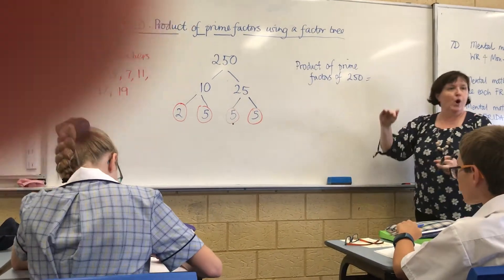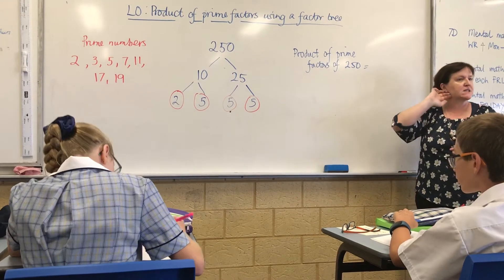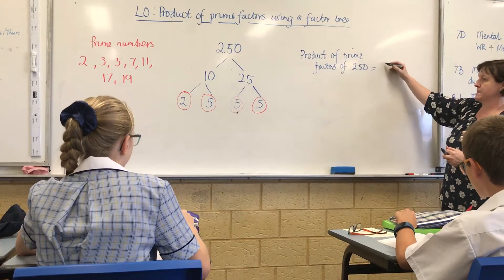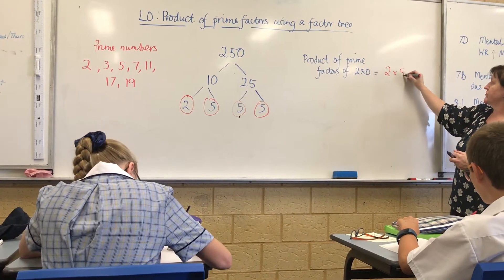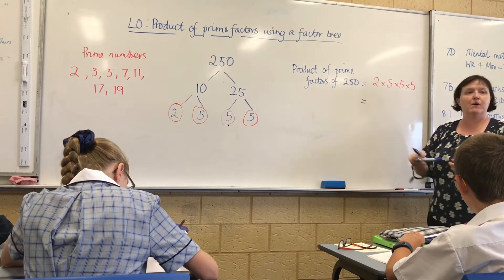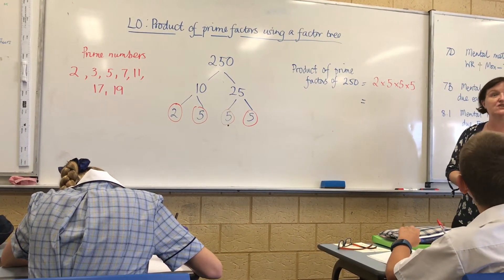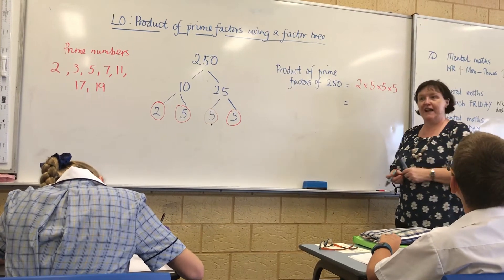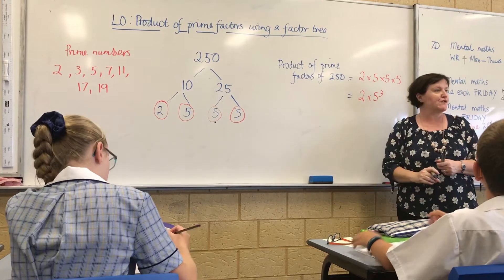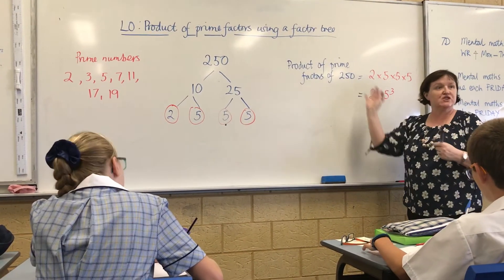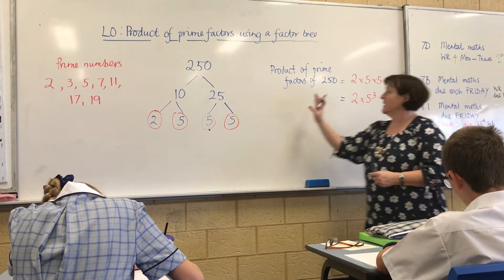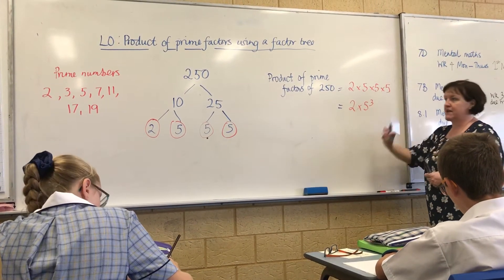So what is the product of the prime factors of 250? Alex says 2 times 5 times 5 times 5 — well done. And in index notation, that would be 2 times 5 cubed — brilliant. So there are your three marks: factor tree, expanded notation, and index notation.